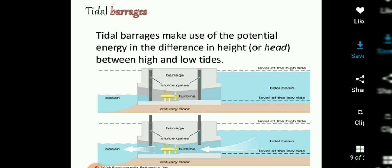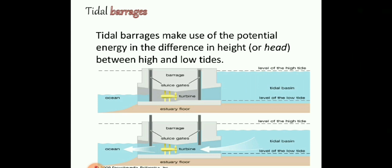The water flows from the higher level to the lower level to equalize. As the water flows through the barrage structure, the potential energy converts to kinetic energy. That kinetic energy drives the turbine, which is connected to the generator, and electricity is produced.